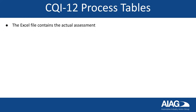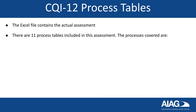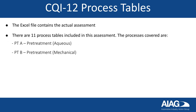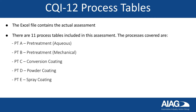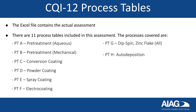The Excel file contains the actual assessment. There are 11 process tables included in this assessment. The 11 processes covered are Pre-Treatment Aqueous, Pre-Treatment Mechanical, Conversion Coating, Powder Coating, Spray Coating, Electrocoating, Dip Spin Zinc Flake, Autodeposition, Cure, Anodizing, and Equipment.